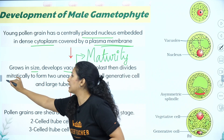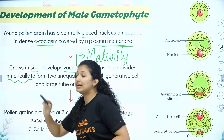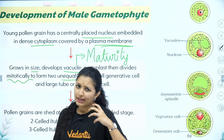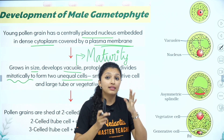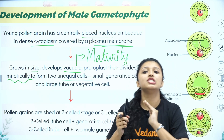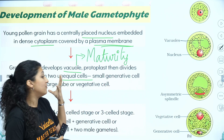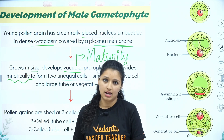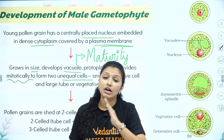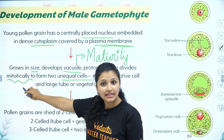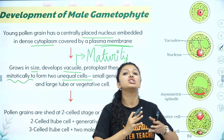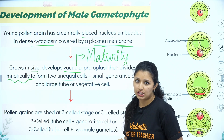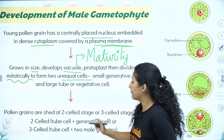The cell then divides mitotically — this is an equational division. Two unequal cells are formed: one large vegetative cell and one small generative cell. Ploidy does not change; both remain haploid because it is mitotic division. So after one mitosis, you have a two-cell pollen grain: vegetative cell and generative cell.